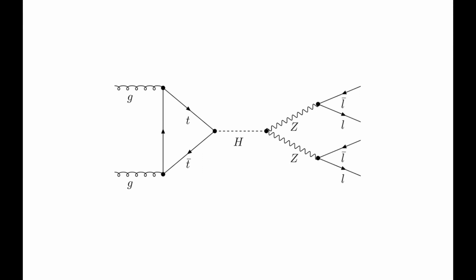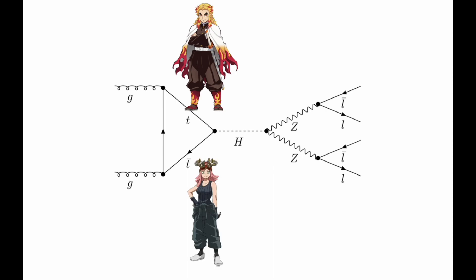Here we have a Feynman diagram that shows you the interaction between a top quark and an anti-top quark. Now when people hear anti-top they think bottom but that's not the case. Anti-top is not bottom, it's an anti-top. You know it when you see it.